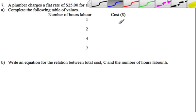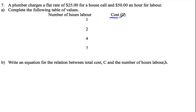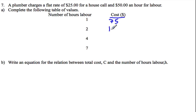In this question, the number of hours of labor is calculated using a flat rate of $25 and $50 per hour. So for the first hour, they're going to charge $50 for the hourly rate plus the $25 for the house call, which comes out to $75. For two hours, it's two times $50 for the hourly rate plus $25, which is $125.